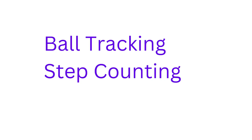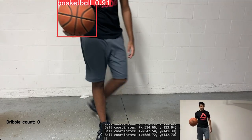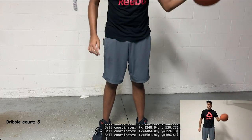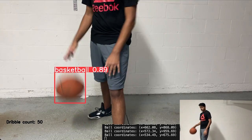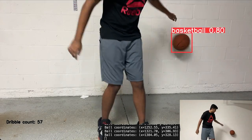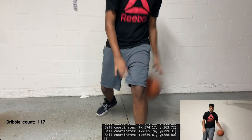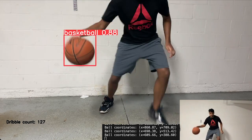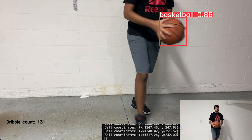With ball and player step tracking in place, we're moving on to the final component: dribble counting. Here, we'll track the ball's vertical movement — if the ball travels a certain distance downwards and then upwards, the system registers this as a dribble. Now, let's put it all together, running the dribble and step counters at the same time. If the step count exceeds 2 without registering a dribble, our system will flag it as a travel.